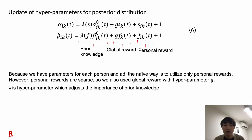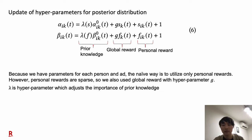Here I will show how we calculate parameters of the posterior distribution from the obtained prior distribution. In Thompson sampling, the prior distribution is a beta distribution, and because it is a natural conjugate, the posterior distribution is also a beta distribution. Therefore, we are interested in obtaining alpha and beta for the posterior distribution. Because we have parameters for each person and ad, the naive way is to utilize only personal rewards. However, personal rewards are sparse, so we also use global rewards with hyperparameter g. And here, lambda is a hyperparameter which adjusts the importance of prior knowledge.